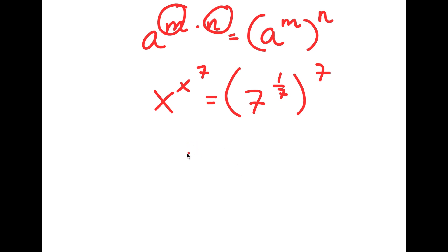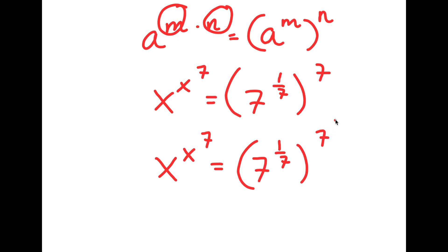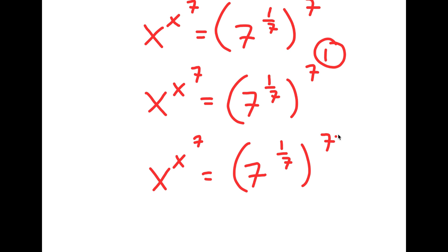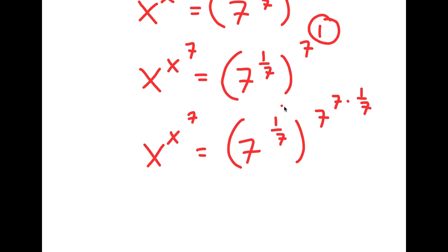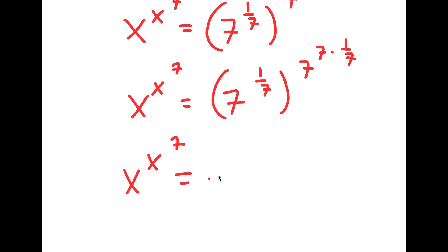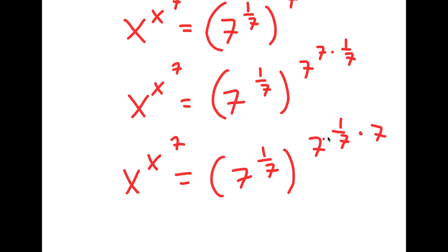Now from here, I'm going to rewrite 7 as 7 to the power of 1. Again, this 1 I'm going to do the same thing as before and rewrite it as 7 times 1 over 7. So now 7 to the power of 7 times 1 over 7 is the same thing as 7 to the power of 7 to the power of 7.